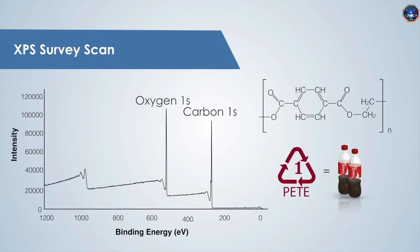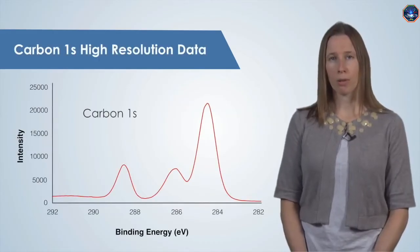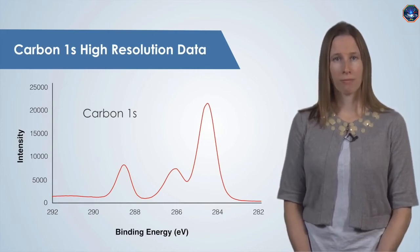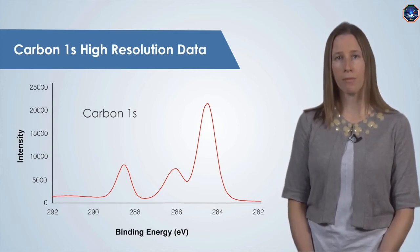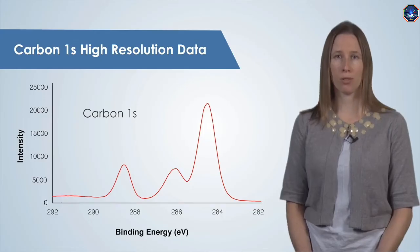We can zoom into each of the peaks in the survey scan to see if these peaks are really composed of multiple peaks. Let's zoom into the region outlined in red in this graph. There are actually three peaks in the carbon 1s spectrum of PET. These peaks can tell us something about what the carbon is bonded to.